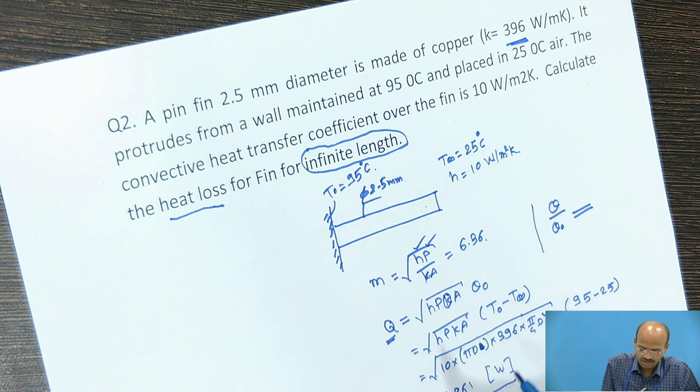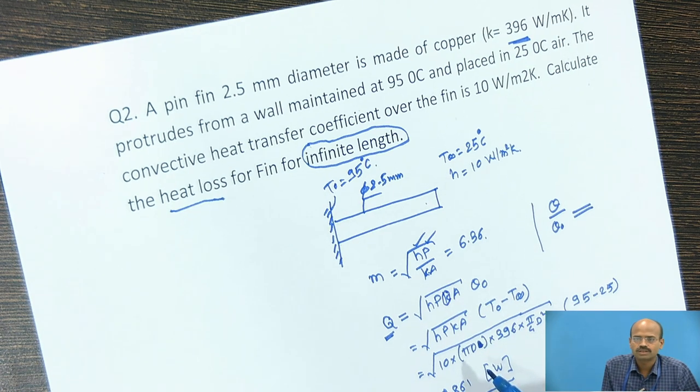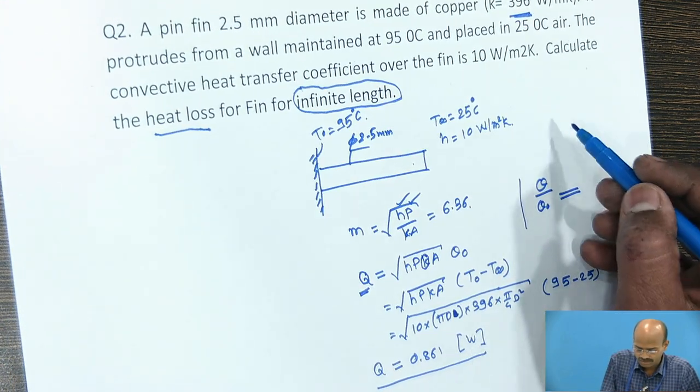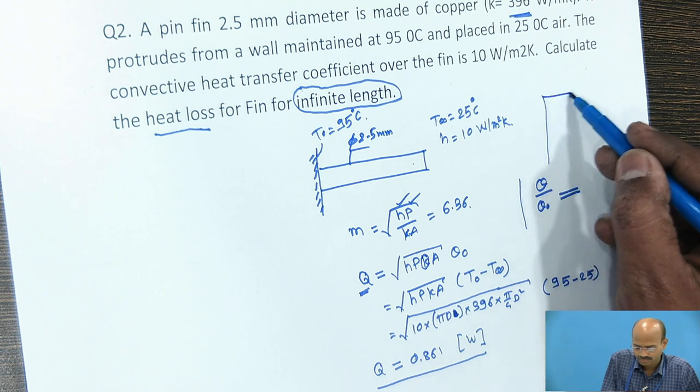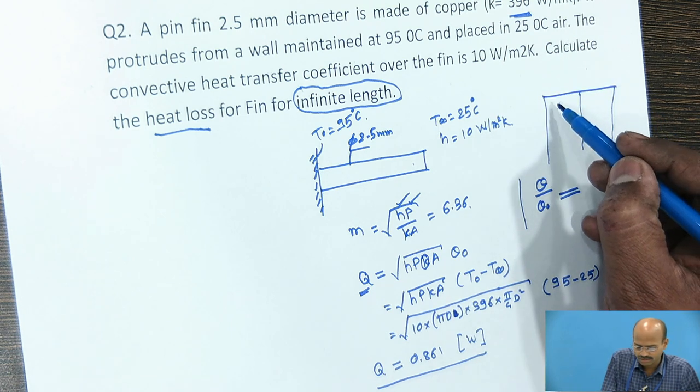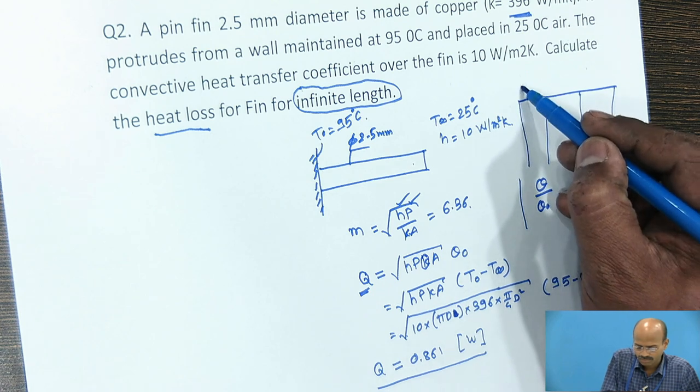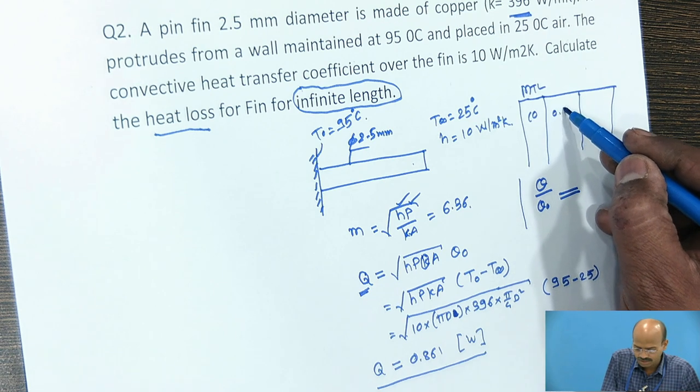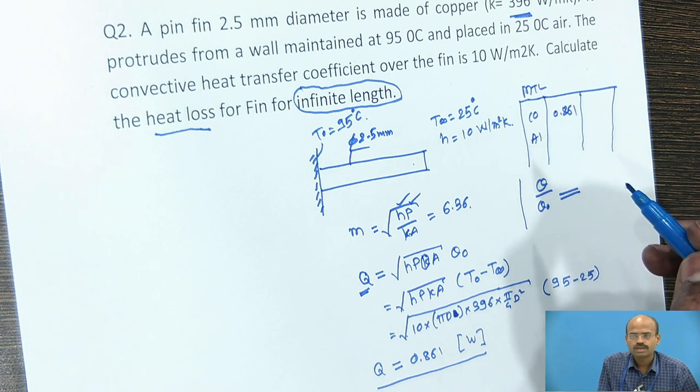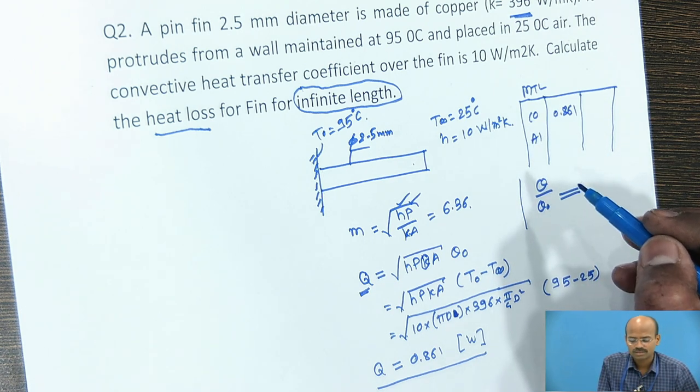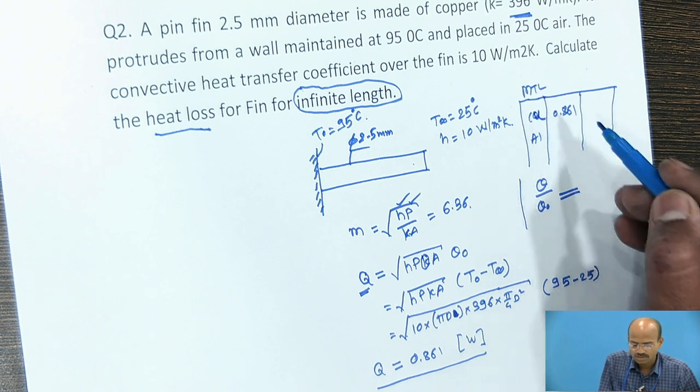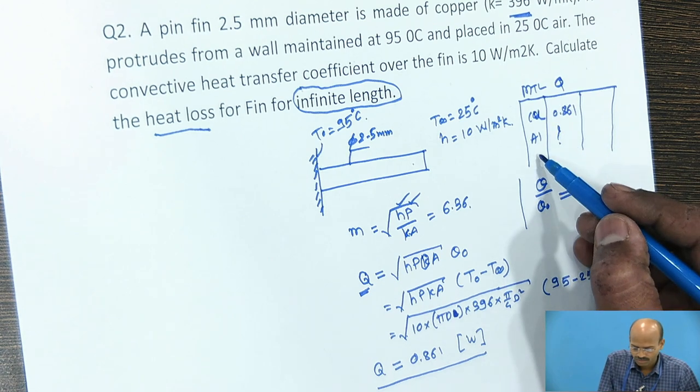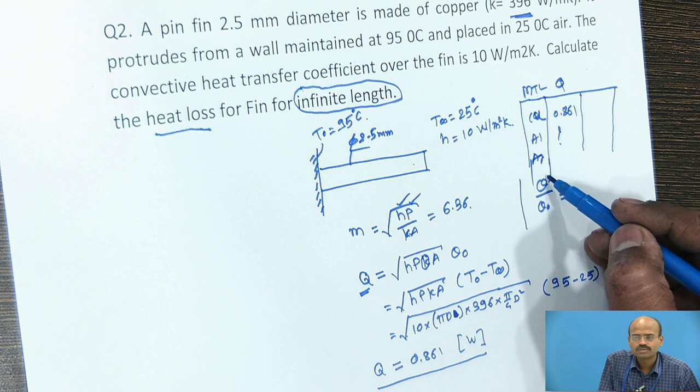For given numerical, the material given is copper, so we use the conductivity of the copper. Given conductivity, we can analyze the problem. Same problem we can analyze for different materials.